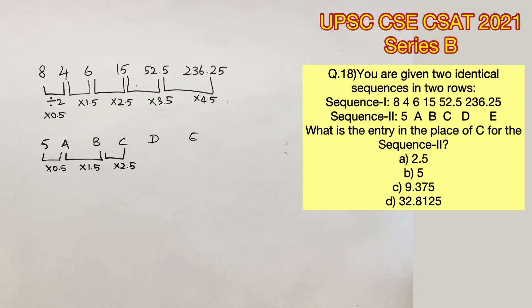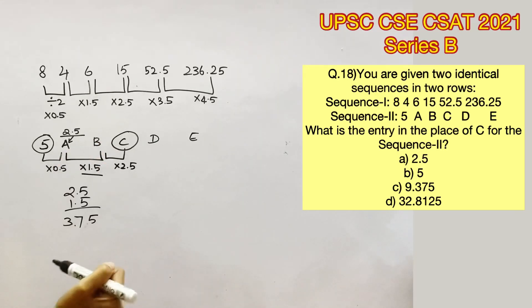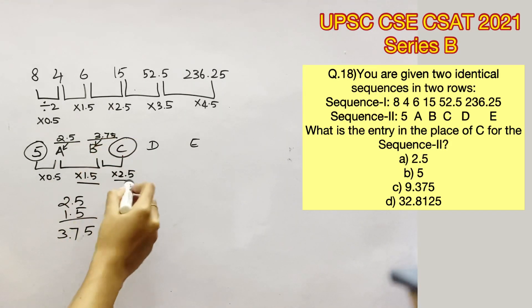We need not solve everything because they are asking for the value of C. So 5 into 0.5 will give us 2.5. So the value of A is 2.5. 2.5 into 1.5 will give us 3.75. So the next value will be 3.75 into 2.5, which is equal to 9.375.